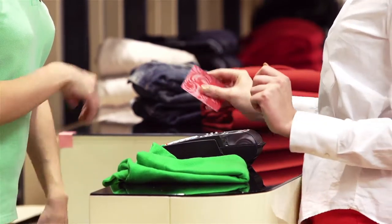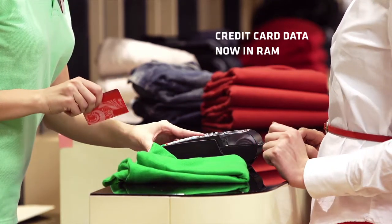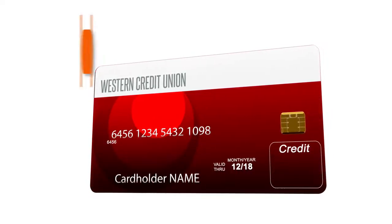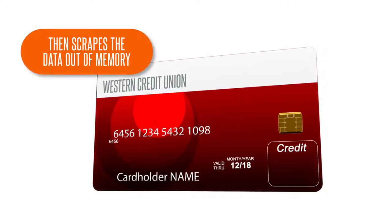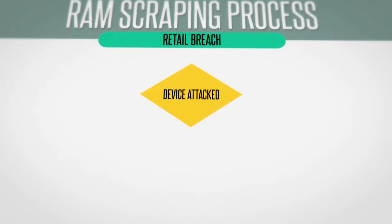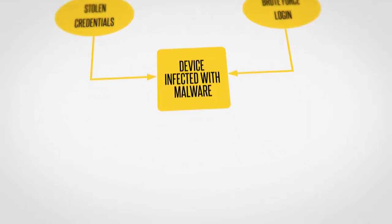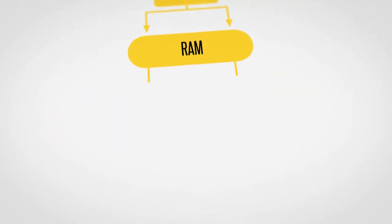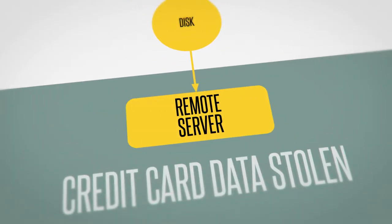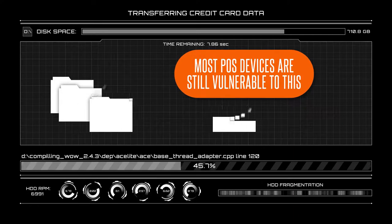A recent and common point-of-sale threat is RAM scraping. Malware gets placed onto the device which inspects memory for credit card data and pulls or scrapes the data. As seen in many high-profile retail breaches, results are stored in a local file system and eventually ported off to a server controlled by the attacker. This is a threat vector not currently protected in many point-of-sale devices.